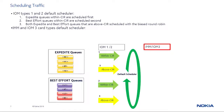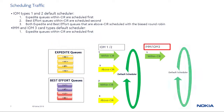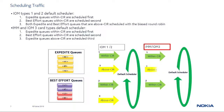For IMM and IOM 3 card types, the scheduling order is: first, expedite queues within CIR; second, best effort queues within CIR; third, expedite queues above CIR; and fourth, best effort queues above CIR are scheduled last.